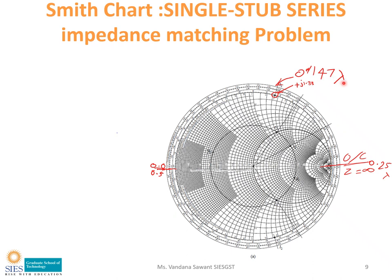Now we need to find the length L1. The end point of the stub is at 0.147 lambda and the other end is open circuited. At open circuit, Z equals infinity, which is located at the right-hand point on the Smith chart when used as an impedance chart. The wavelength at the open circuit point is 0.25 lambda. Note that in shunt stub design, the leftmost point is the short circuit; here we use open circuit.